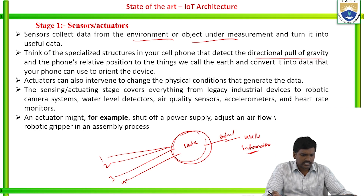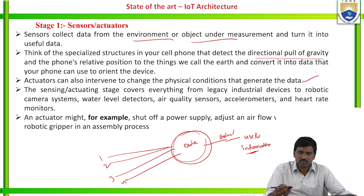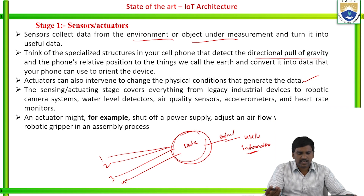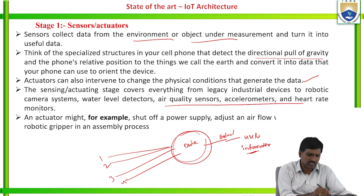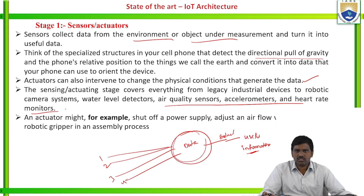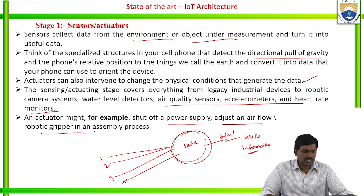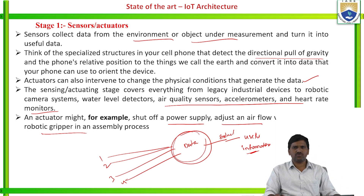Actuators can also intervene to change physical control or conditions and generate data. The sensing and actuating stage covers everything from legacy industrial devices to robotic camera systems, water level detectors, air quality sensors, axial accelerometers, and motors. An actuator might, for example, set a power supply, adjust air flow, adjust volume, or control a robotic arm in an assembly process. These are the specifications of sensors and actuators for gathering information from various situations.